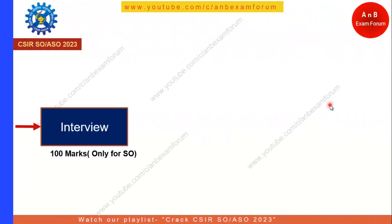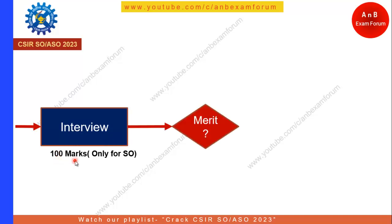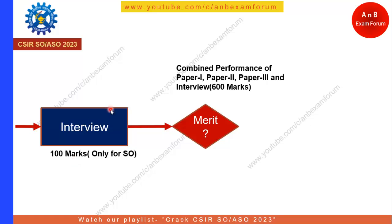After that, for Section Officer only, there will be an interview. Why is there an interview for SO? Because it is a Level 8 job, and for Level 8 there is an interview. For Assistant Section Officer, there will be no interview, but there will be a Computer Proficiency Test, which I will cover in the next slide. The interview will be of 100 marks, and again there will be a merit based on the combined performance of all three papers (500 marks) along with the interview — a grand total of 600 marks.